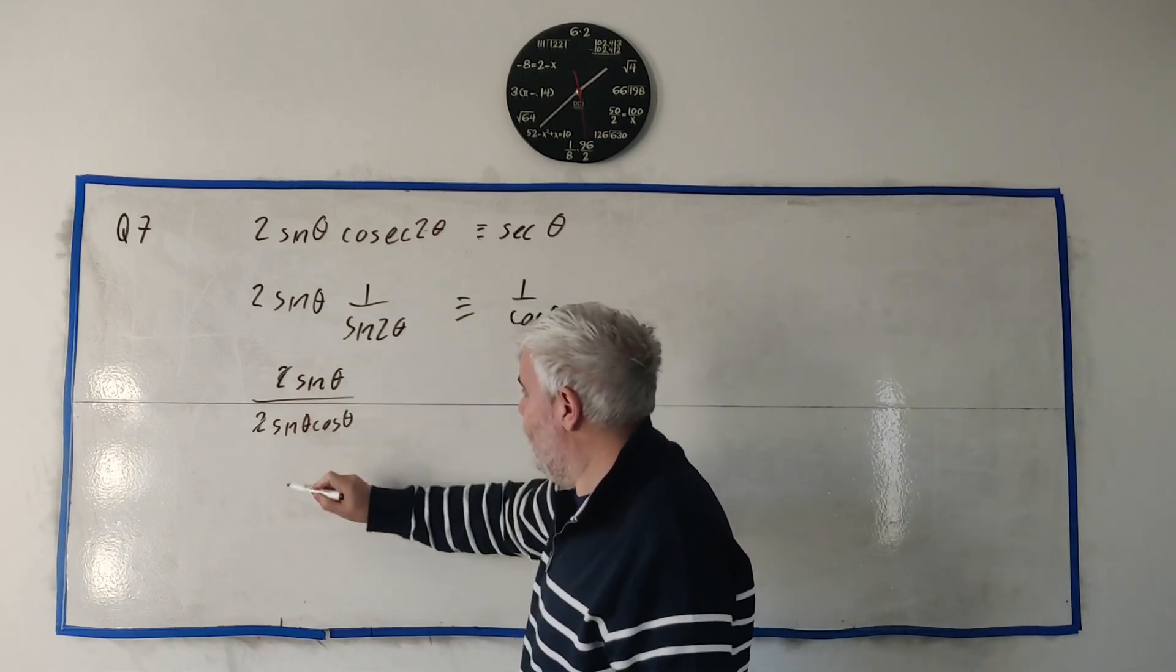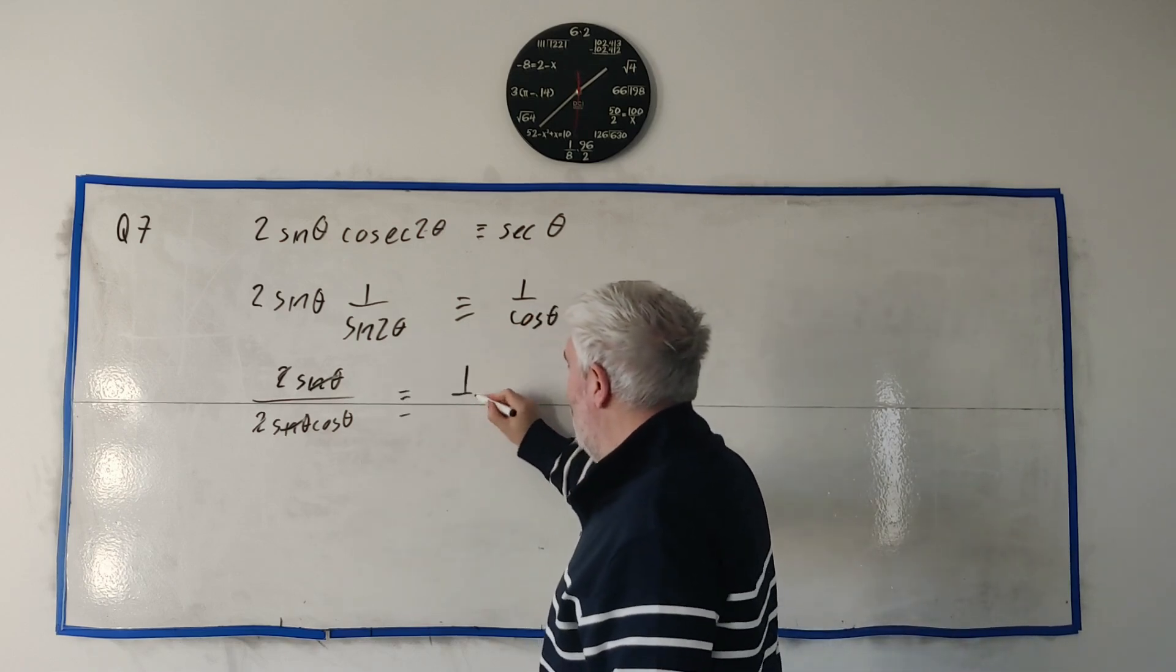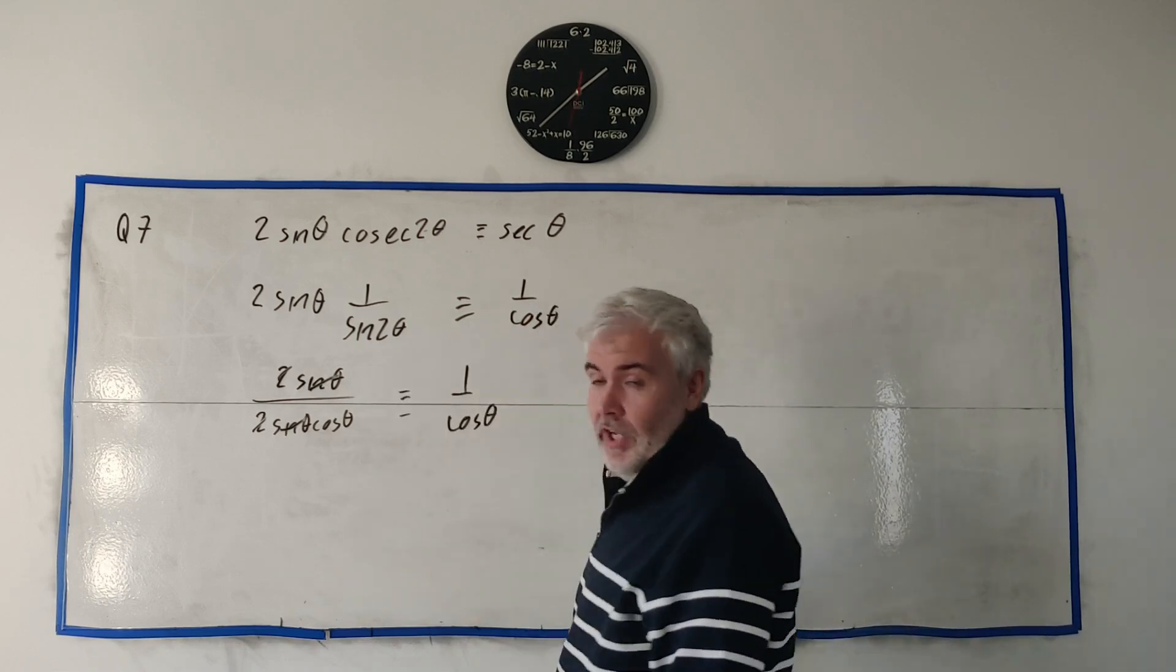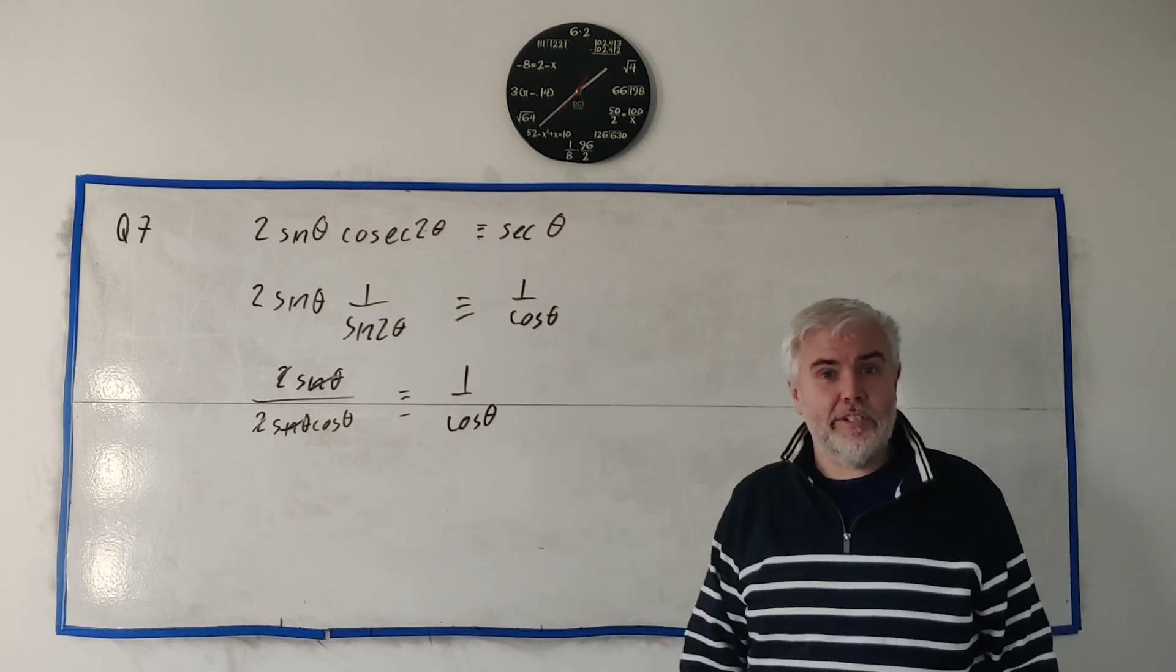And yeah, that's pretty much it then, the 2's cancel, the sine's cancel, and we're just left with what we were looking for, 1 over cosine θ. And that's it, you're only getting two marks for that, so that's why it wasn't all that long.